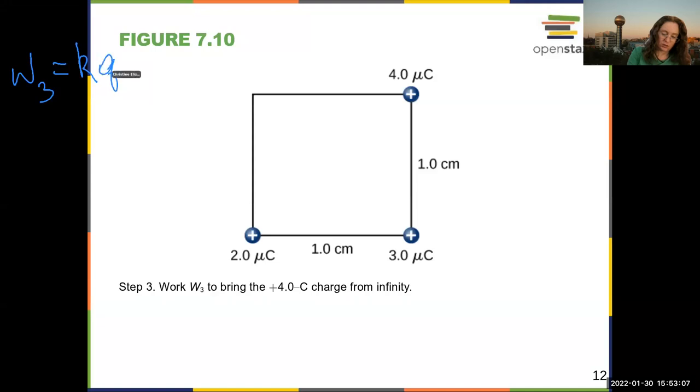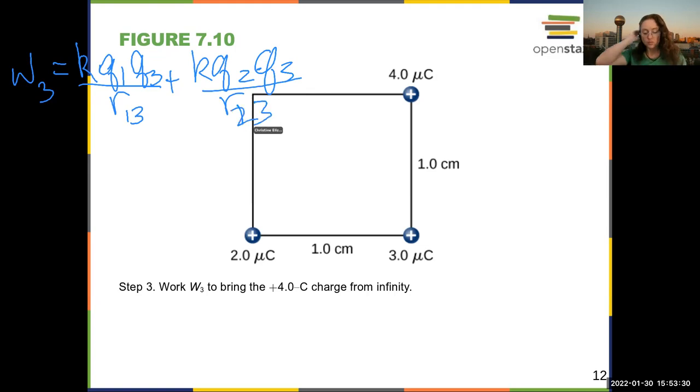K Q₁ Q₃ over R₁₃ plus K Q₂ Q₃ over R₂₃. And here, this gets a little trickier.